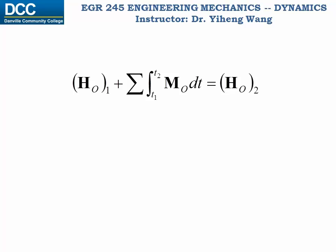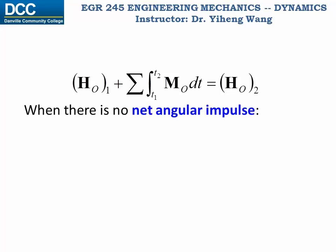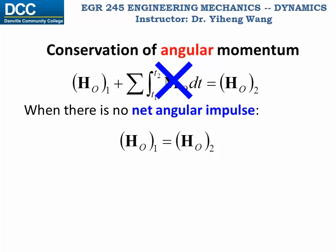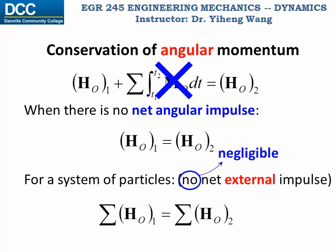From the principle of angular impulse and momentum, if there is no net angular impulse, that term is eliminated and we get conservation of angular momentum. This means the initial angular momentum of the particle equals its final angular momentum, both calculated about the same reference point O. Conservation of angular momentum also applies to a system of particles if there is no or negligible net external angular impulse. Make sure the angular momentum is calculated about the same reference point before and after the process.